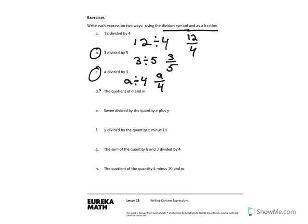Exercise D says the quotient of 6 and m. Just like I showed before, when you have the word quotient and the word and, that and is your division symbol. So it looks like this: 6 divided by m, and written as a fraction it's 6 over m.